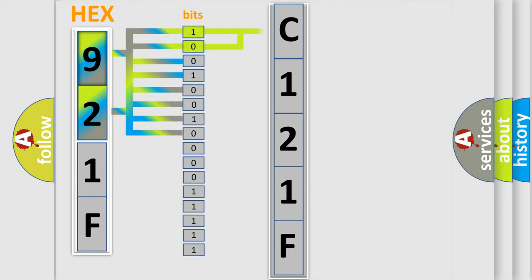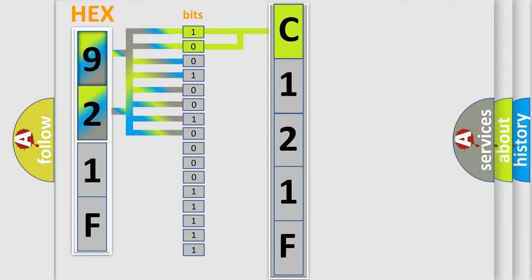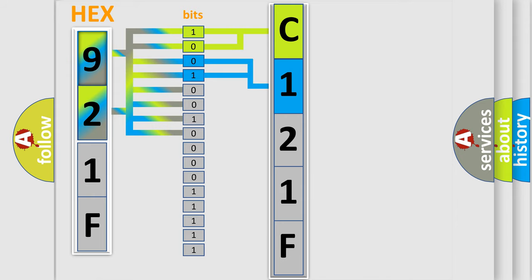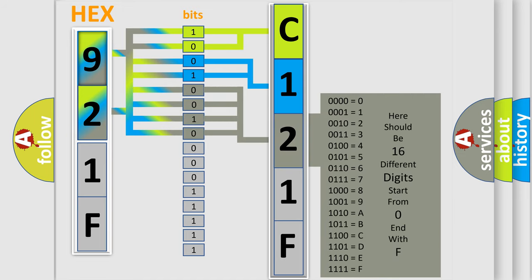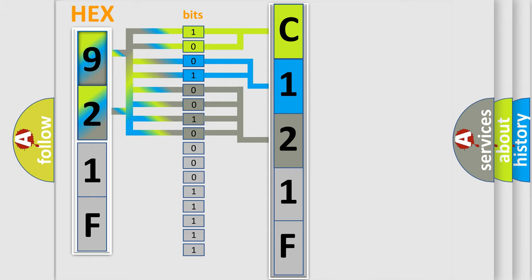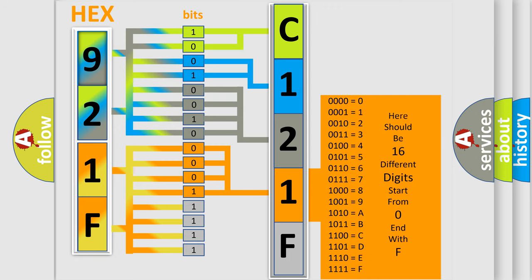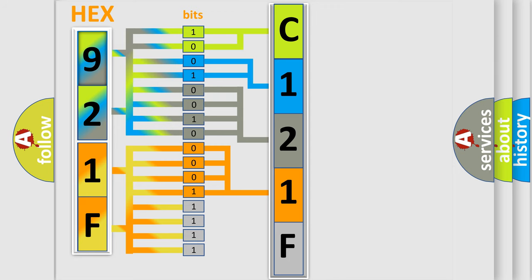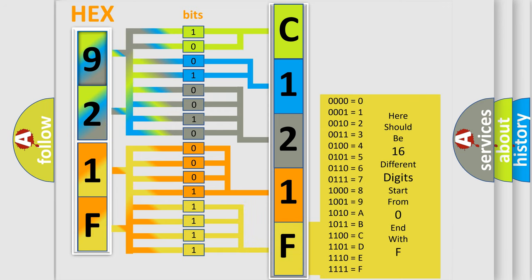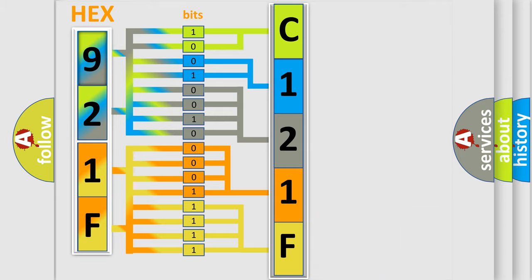By combining the first two bits, the basic character of the error code is expressed. The next two bits determine the second character. The last bits of the first byte define the third character of the code. The second byte is composed of a combination of eight bits — the first four bits determine the fourth character, and the last four bits define the fifth character. A single byte conceals 256 possible combinations.